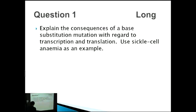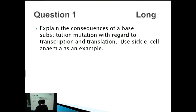These genetics short answer questions can sometimes be a bit tricky, so we're going to go through this long question first. The question is: explain the consequences of a base substitution mutation with regard to transcription and translation, and we're going to use sickle cell anemia as an example.